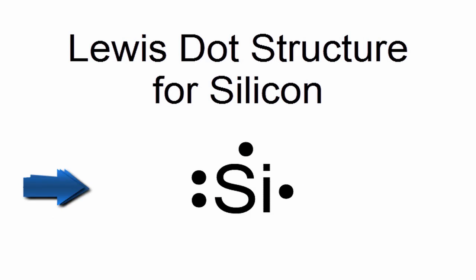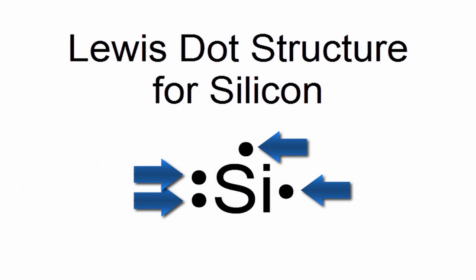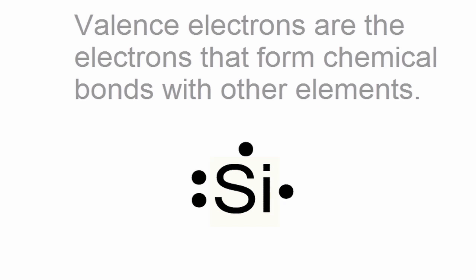Silicon is in group 14 or 4A. That means it has four valence electrons. We'll put those four valence electrons around the element symbol Si for silicon.